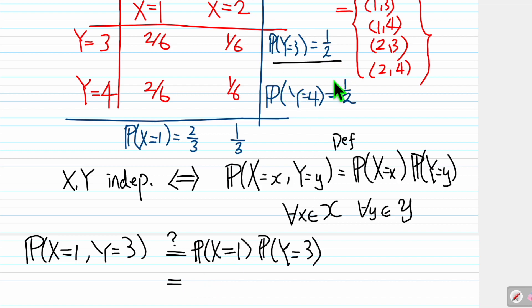So from this one, we know P(Y=3) is half, so this is half. From here, we know P(X=1) is 2/3. So it will be what, it will be 1/3.